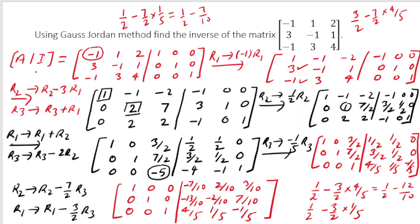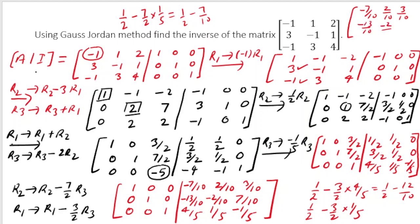We have obtained the identity on the left, so the right side is A-inverse. Writing it clearly: Row 1: minus 7/10, 2/10, 3/10. Row 2: minus 13/10, minus 2/10, 7/10. Row 3: 4/5, 1/5, minus 1/5. Please verify that this answer is correct. To gain confidence, take the same problem and try the operations yourself, or take any non-singular matrix and practice.